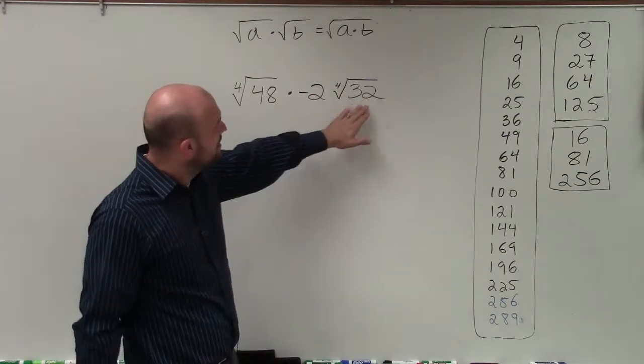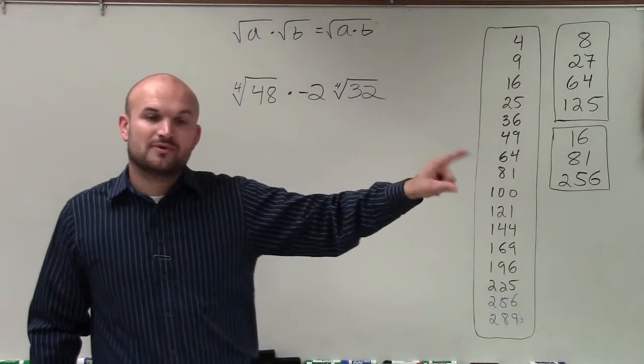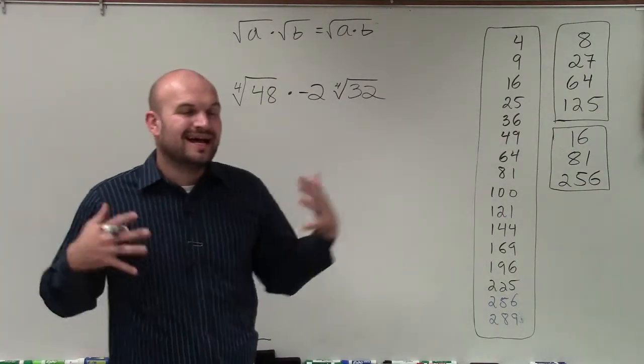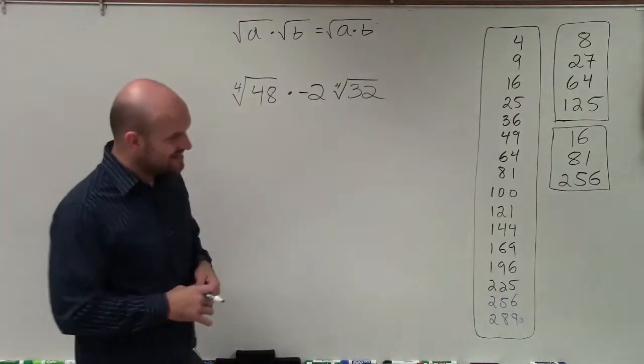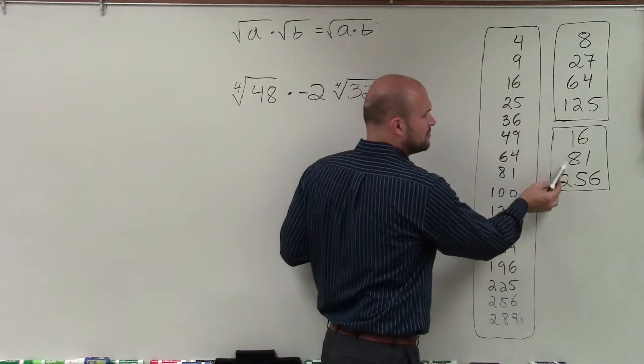We could obviously prime factorize both 48 and 32, and when we're taking the fourth root, we can take the fourth root of prime numbers that have four of them together and then take them out. But I think that's pretty time intensive. So what I like to do is look at our perfect fourth root powers.